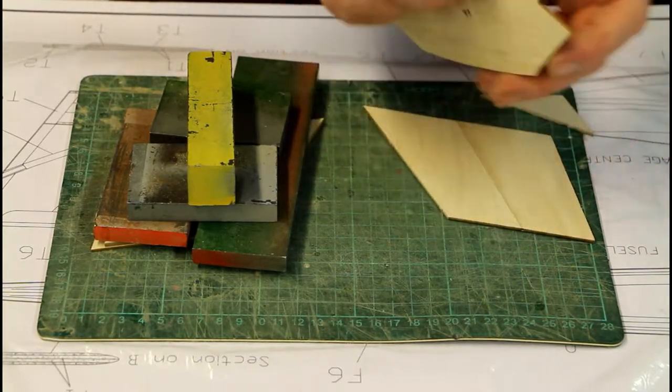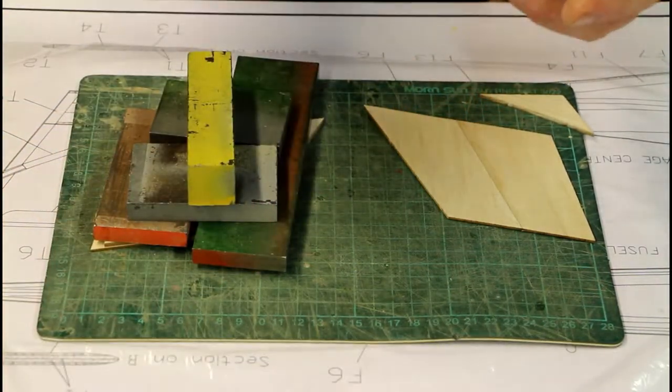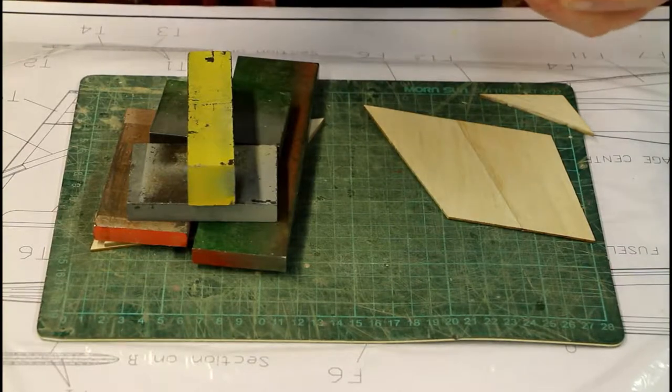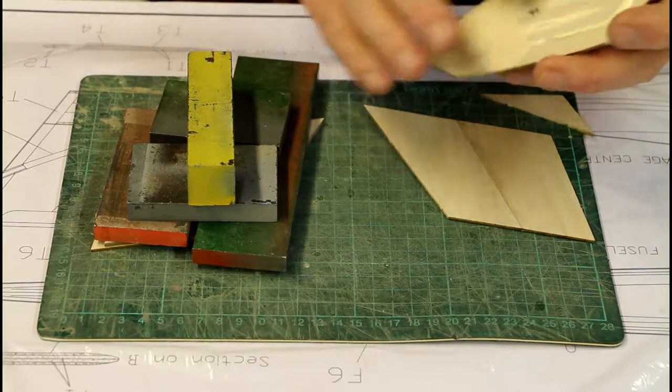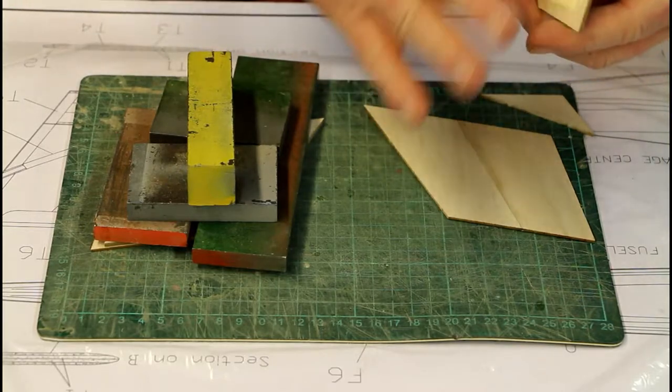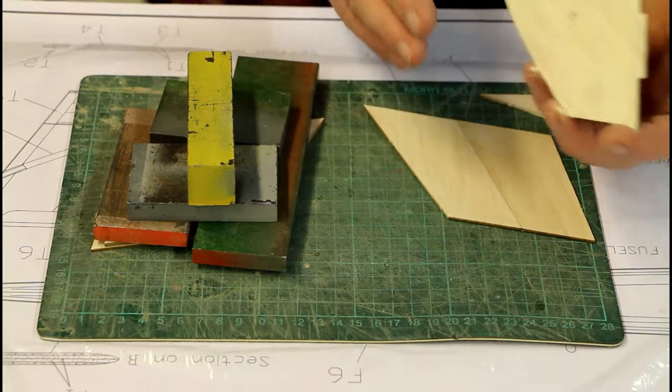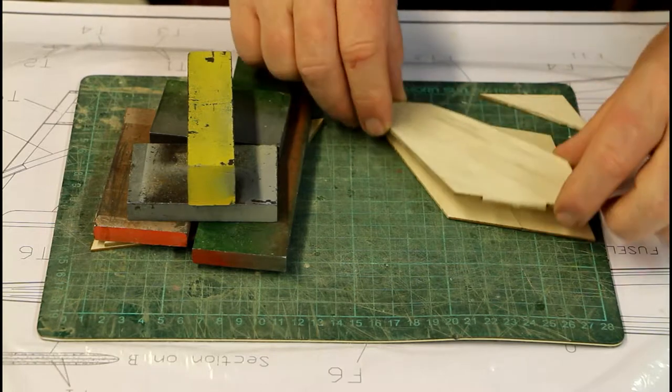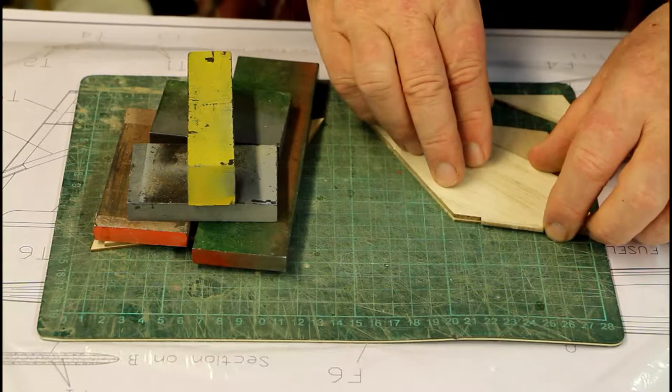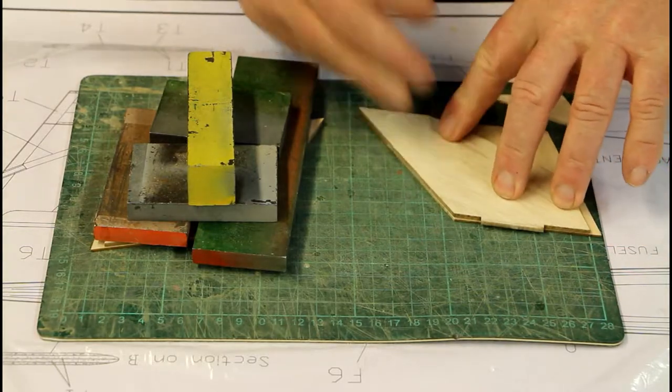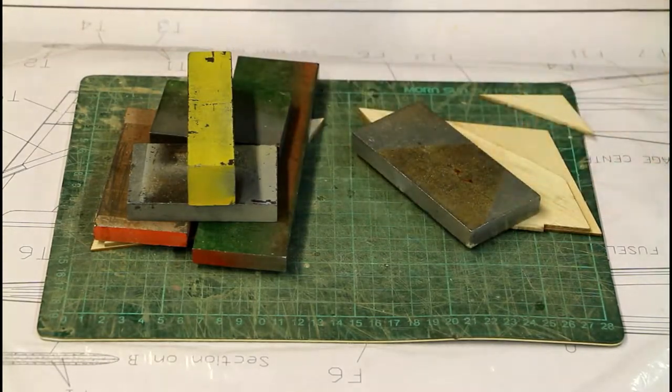Now I want to use a glue that doesn't harden immediately, like this one. It gives me a little bit of working time. But the problem with this is that the base of the glue is water. And when water starts to enter the balsa it starts to warp. So I want to do something to keep it from warping, like putting heavy weights on it.